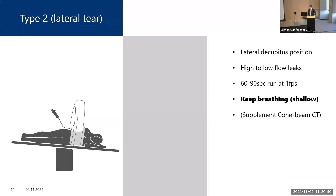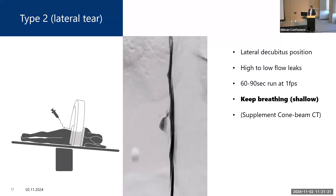For Type 2 leaks, the patient should be positioned in the lateral decubitus position. These leaks can be high to low flow, so we suggest an imaging run between 60 and 90 seconds — nobody can hold their breath that long, so the patient must breathe. It is very important to instruct the patient: breathe shallowly, breathe evenly, and try not to move. This gives you the best chance of obtaining high-quality images to make the diagnosis.